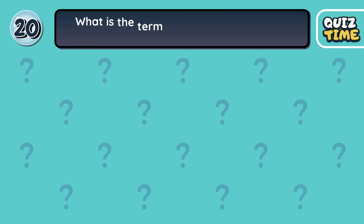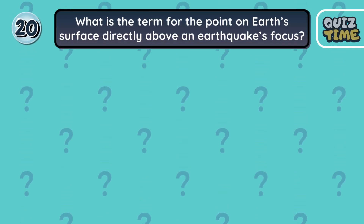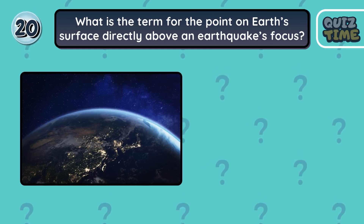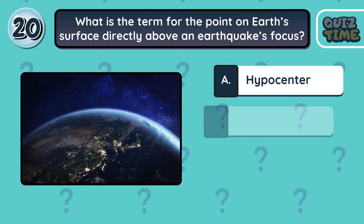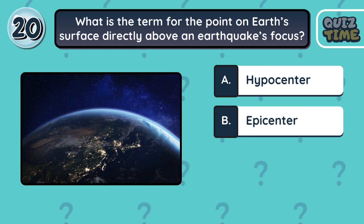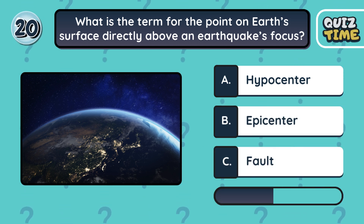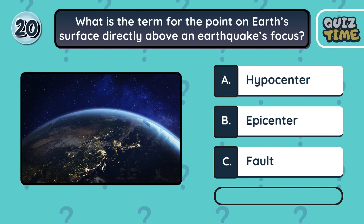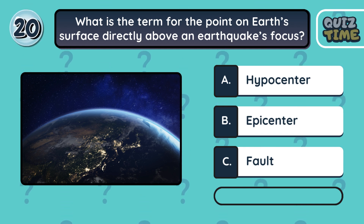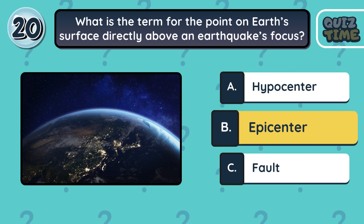Number 20. What is the term for the point on Earth's surface directly above an earthquake's focus? A. Hypocenter. B. Epicenter. C. Focus. The correct answer is B. Epicenter.